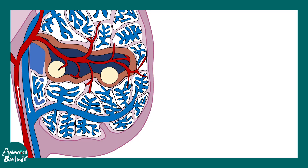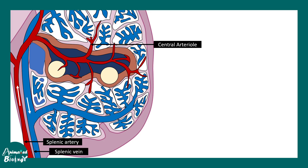This is a cross section of the spleen. The splenic artery and the splenic vein are the input and output of blood into the spleen. The central arteriole supplies blood inside the spleen, and around it there would be several sinuses. The trabecula is basically the capsule invaginating inside the spleen.